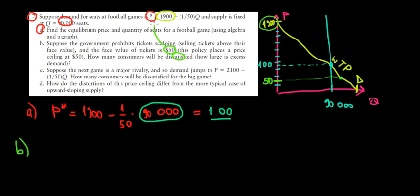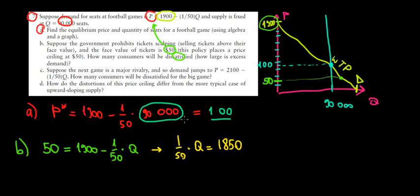If the price is 50 and we substitute it into the function, we will have that 50 equals 1,900 minus 1 over 50 times the quantity. I'm just solving the calculations faster because I want to keep the videos shorter so we can stay more focused on the things that matter. The math is just a mechanical part of it. If we work out the math, we would have that 1 over 50 times quantity equals 1,850. And if we solve for quantity, the equilibrium quantity at that level would be equal to 92,500 seats.